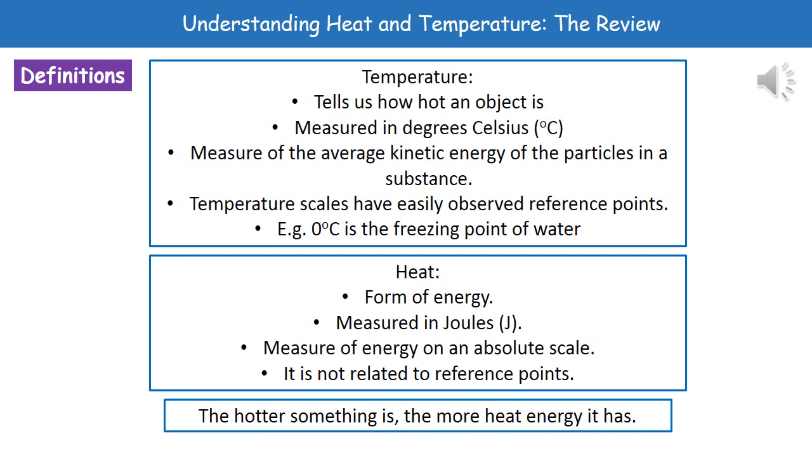If we consider heat then, this is a form of energy. Hopefully we know that from lower down the school. Because it's a form of energy that means it must be measured in joules which has got the symbol of a capital J. And it is a measure of energy on an absolute scale. This means it isn't related to any reference points which means it's not quite such a straightforward scale as our temperature one. But what we do need to remember is that the hotter something is, the more heat energy it has.